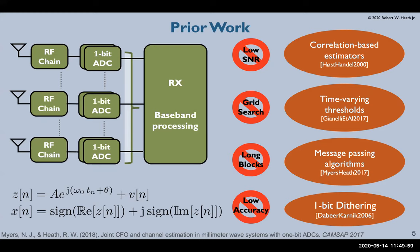When we look at this paradigm the baseband processing is more complex and it's unable to reach the same performance as full resolution. Prior work has looked at a number of different methods with the most common ones being correlation based, time varying thresholding, message passing algorithms and dithering.